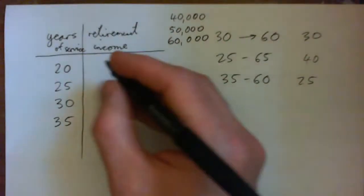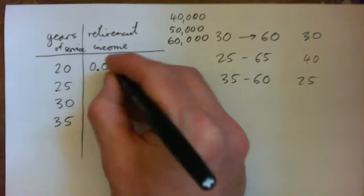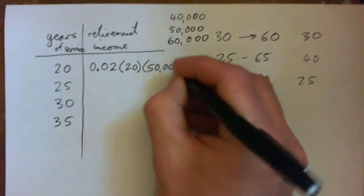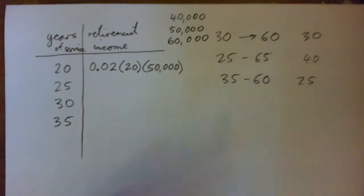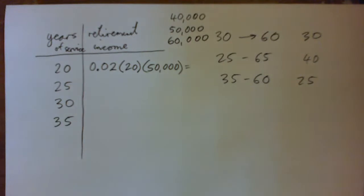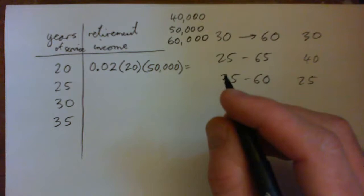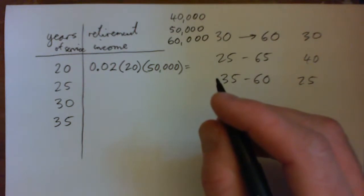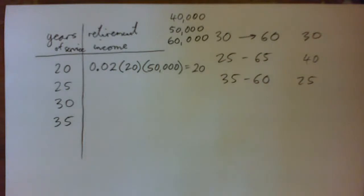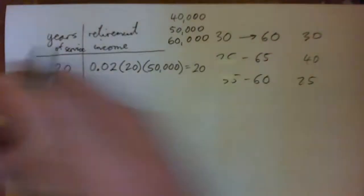So 0.02 times the number of years of service, 20, times I'm gonna pick 50,000 and we calculate that. That should work out to be, yeah, 20,000 right. Sorry, I can't do it in my head.